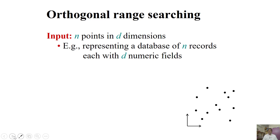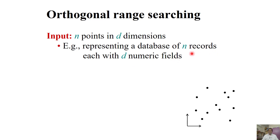In this lecture we will cover one problem called the orthogonal range search problem. The input is n points in any dimension — 2D, 3D, 4D, or 1D. This corresponds to n records in a database, where each record has some attributes or fields. For example, a student record may have marks in different subjects, CGPA, SGPA, and marks in an algorithm course. Each record is a point, and this point is d-dimensional, where d depends on our application.